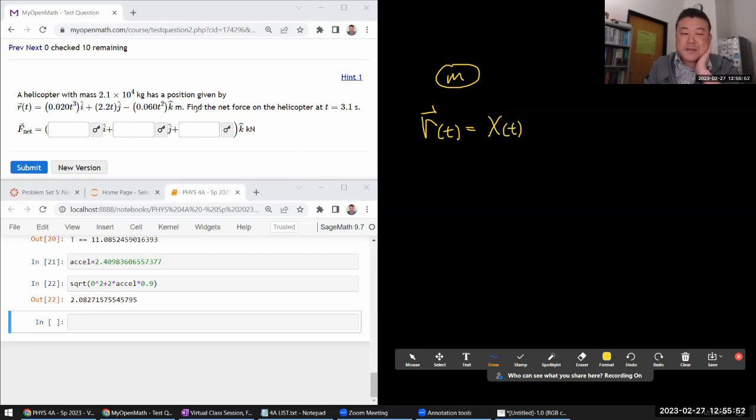They use i hat, j hat, k hat - I prefer x hat because that way it's easier for me to remember that's the x component. And they give us y position as a function of time, and they give us the z position as a function of time.